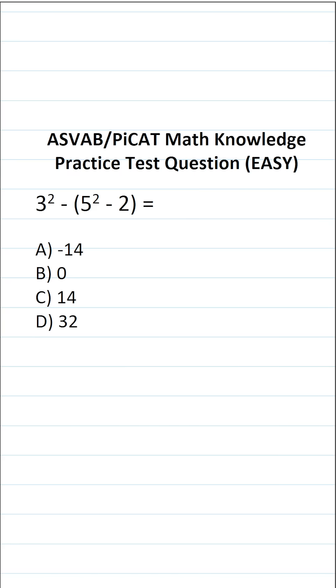This math knowledge practice test question for the ASVAB and PiCAT says 3 squared minus 5 squared minus 2 in parentheses equals. So we want to evaluate this expression.